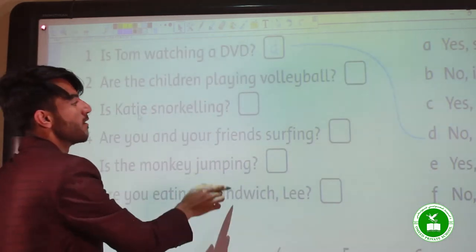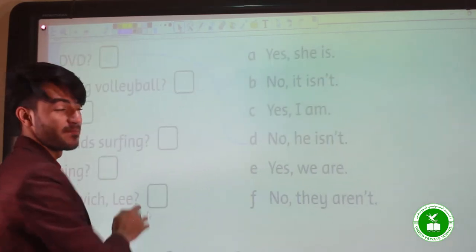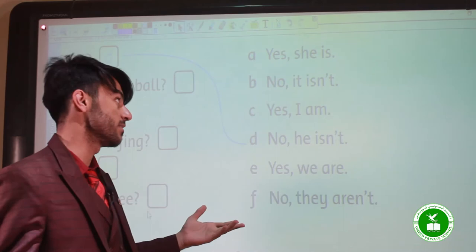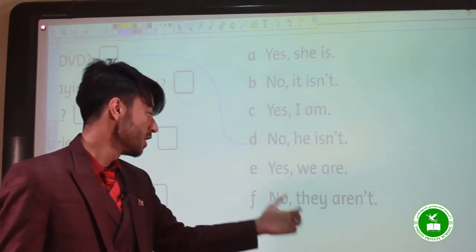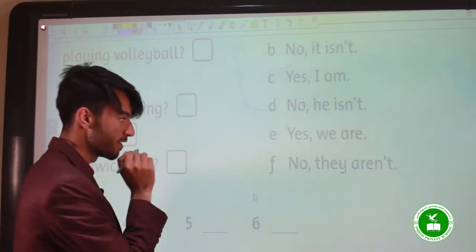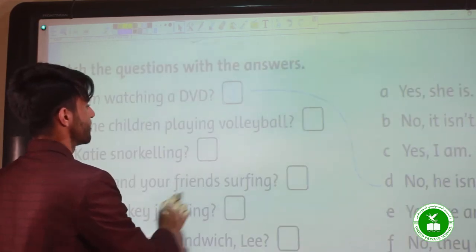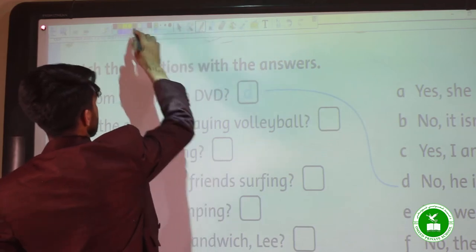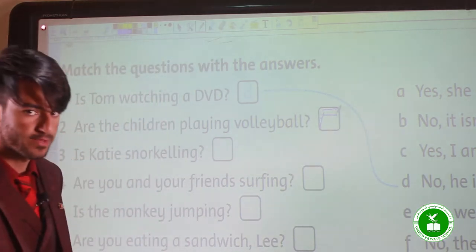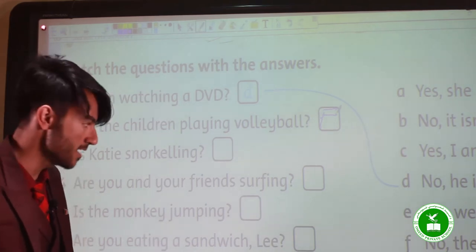Are the children playing volleyball? Let's see. Yes, she is. The answer is yes. No, it isn't. Yes, I am. Yes, we are. No, they aren't. Which letter is correct? Letter F. So we have to write here letter F. Complete these sentences yourselves because they are very easy sentences.